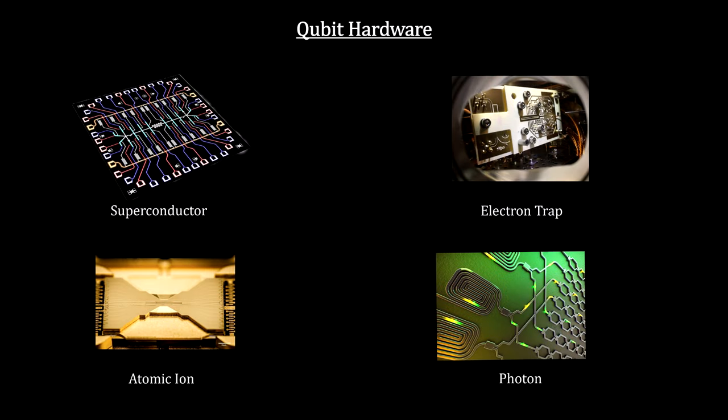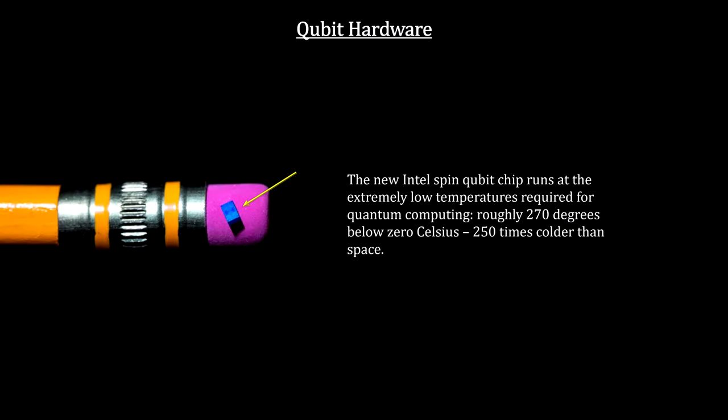There are a number of ways to create quantum bits: atoms, photons, superconductors, etc. Silicon spin qubits are also promising. A number of companies are working on them. As of early 2022, Intel appears to have the lead with a 26 qubit product. The long-term goal is to reach a million.